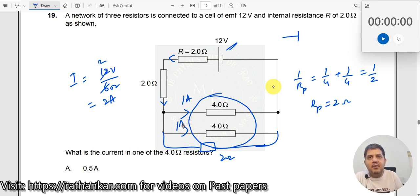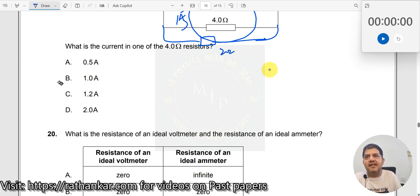This is now getting branched into two equal resistors which means you get 1 ampere here, 1 ampere here. Therefore, now the answer should be 1 ampere.